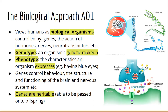Key terms: genotype means the genetic makeup of an individual, which is passed on from generation to generation. For example, someone may have a dominant brown eyes allele and a recessive blue eyes allele.